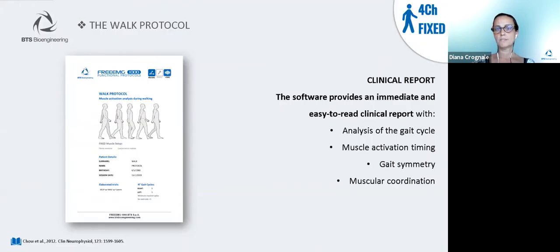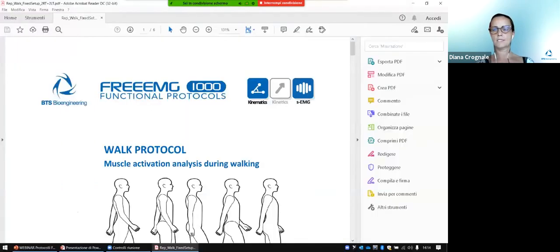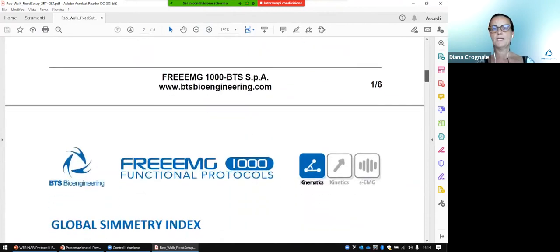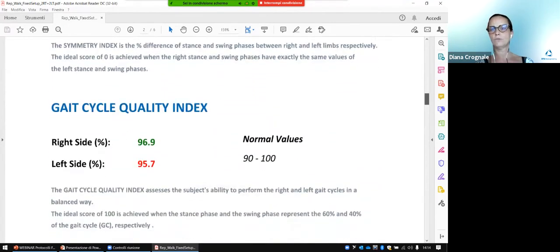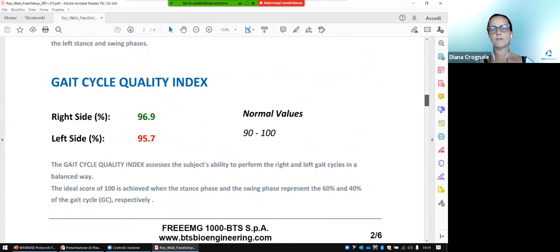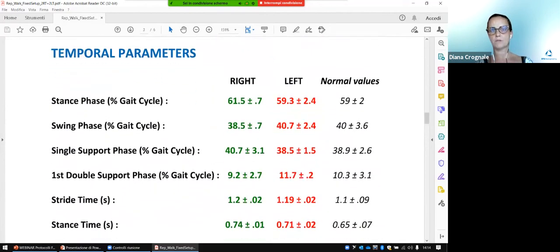The protocol returns a report where we find different information. In the first page, we find the symmetry and quality indexes related to the gait cycle. For example, we have the main temporal parameters of the gait cycle, such as the duration of the stance phase, the swing phase, the single and double support phase, the cadence, the stride time — and all the parameters of the patient are compared to some normal values.